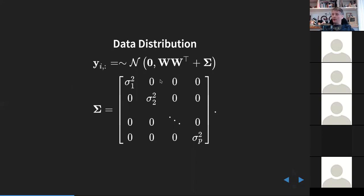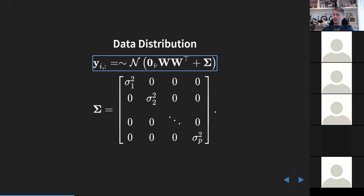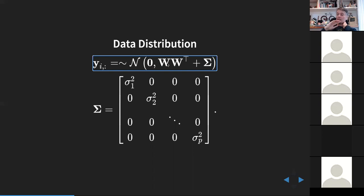What we're assuming about our data is that y is sampled from a Gaussian with zero mean and according to this covariance structure. The thing to notice about this structure is that it's actually a low-rank structure. The first matrix WW-transpose is not full rank because it's a p-by-q matrix and q is less than p — q is our latent dimensionality. WW-transpose is low rank; W-transpose W would be full rank.